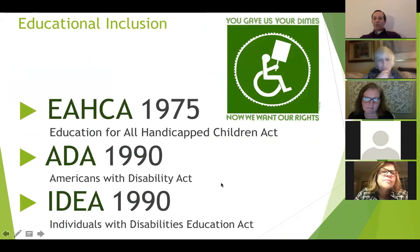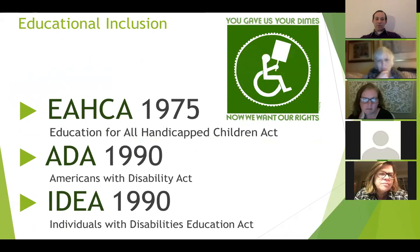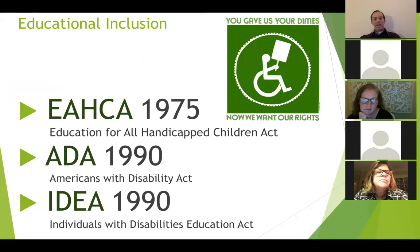I'm not going to go through the full history of the legal battle, but starting with the Education for All Handicapped Children Act in 1975, acknowledging that students have different needs. Then in the 90s with ADA, the Americans with Disabilities Act, and IDEA, the Individuals with Disabilities Education Act, understanding that students would need individual educational plans. It evolved further with No Child Left Behind. Legally, there's been more acknowledgment that the educational system needs to be more inclusive.